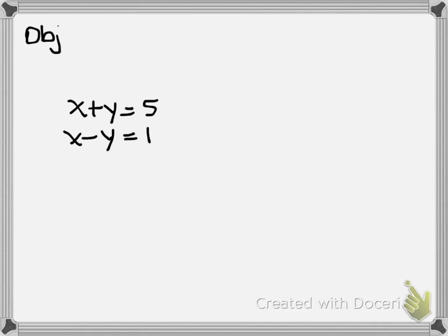Mark suggested: multiply maybe a third by zero. I could, but then I'm changing an entire equation — I can't change the equations. The equations have to stay the way they are right now. So they have to stay those values, but there's something mathematically I could do that's going to make one of the terms go away.